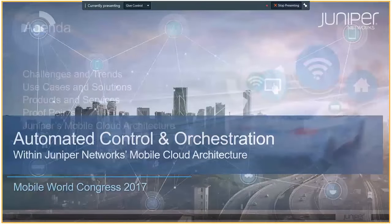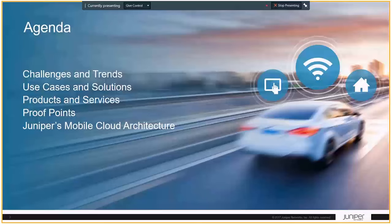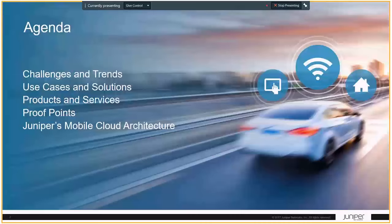Here are the topics we'll cover today. I'll talk a little bit about the challenges and trends — most of you should be familiar with the challenges. I'll talk about the use cases and solutions, but mostly I'll talk about the products and services and how Junos, which is our operating system, was designed to aid automation and lead your networks into the future. There are a few proof points, and then I'll give an overview of Juniper's mobile cloud architecture in its entirety.